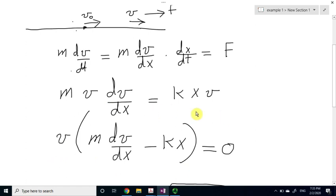So I will write the above equation as here. So I took v as a common factor, and what is left inside the bracket is mass dv by dx minus kx equal to 0.